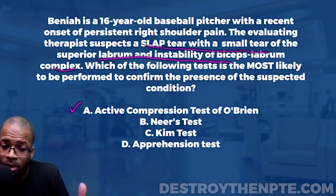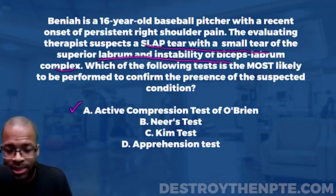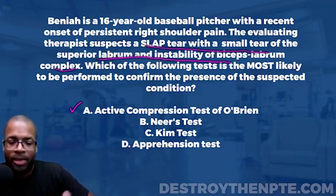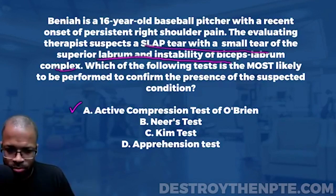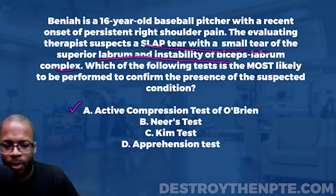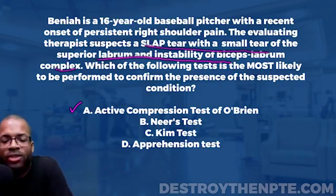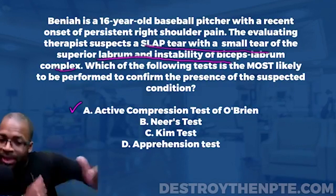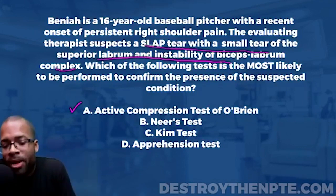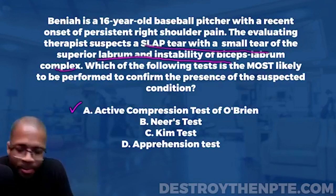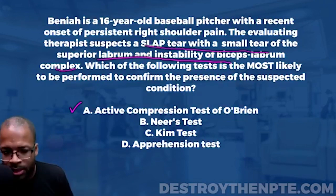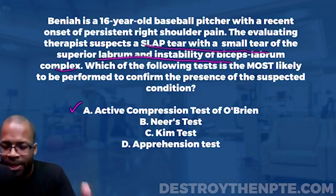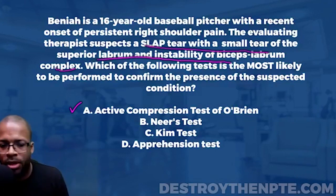Answer B is Neer's test. This is mostly passive — we internally rotate the patient's arm and flex it up to end range, looking for reproduction of symptoms. What does the Neer's test primarily test for? Subacromial impingement. Is that what our patient is dealing with? No. So we eliminate answer B.